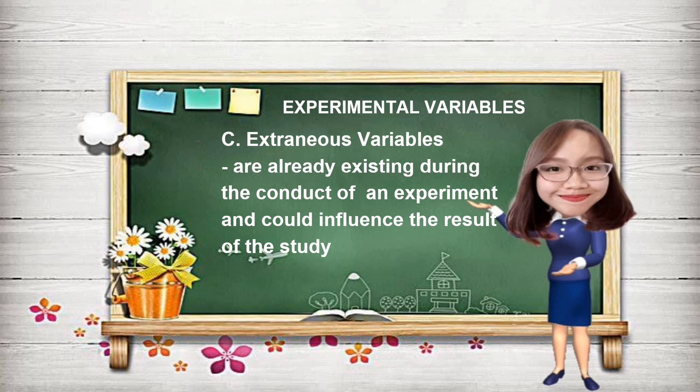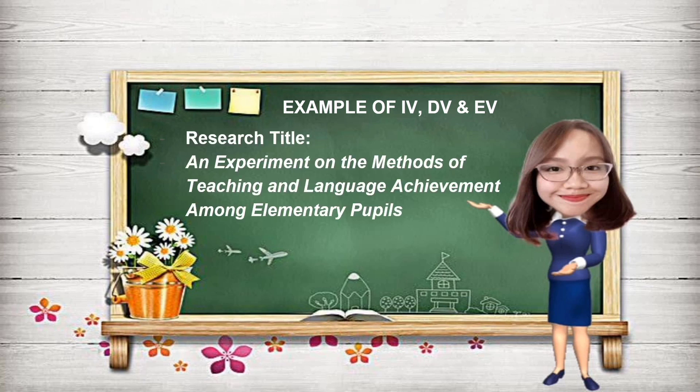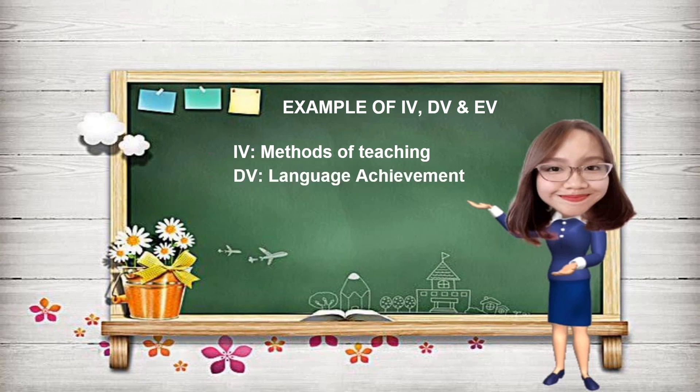Take a look at this example: an experiment on the methods of teaching and language achievement among elementary pupils. The independent variable is methods of teaching, the dependent variable is language achievement, and the extraneous variables are ventilation, facilities, and physical ambience.